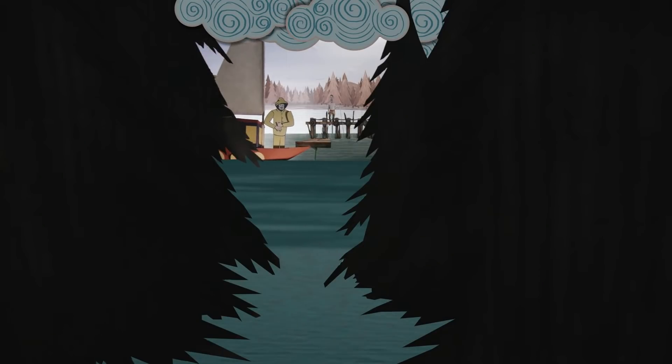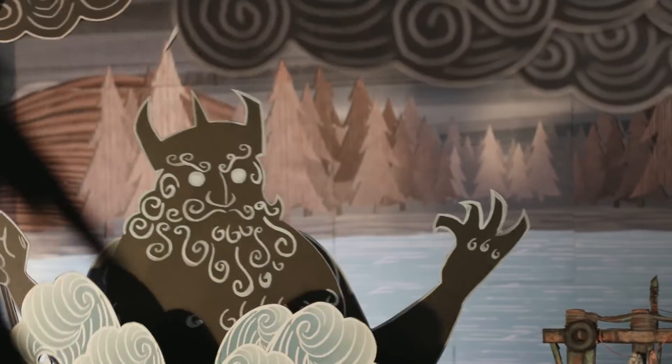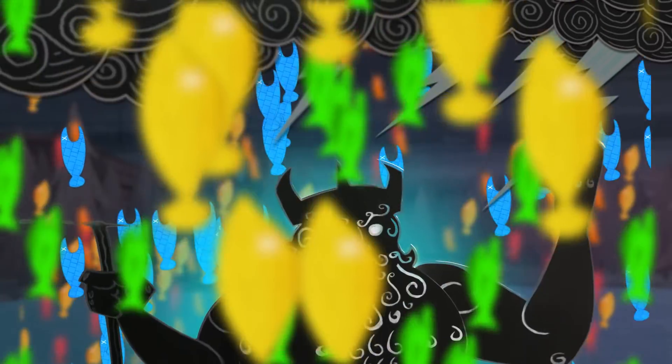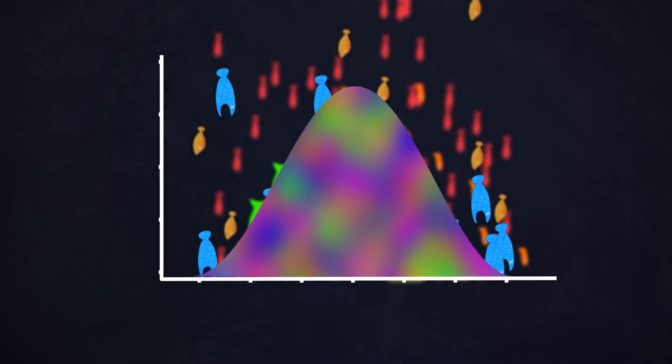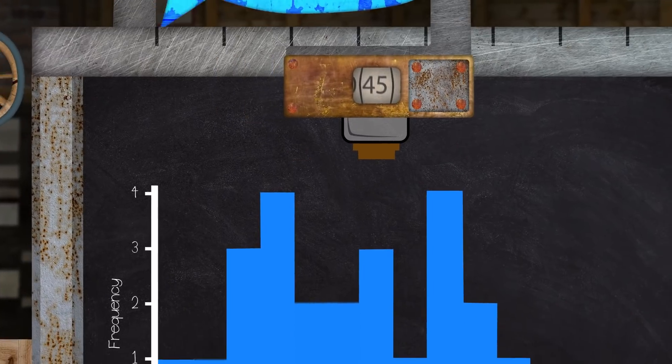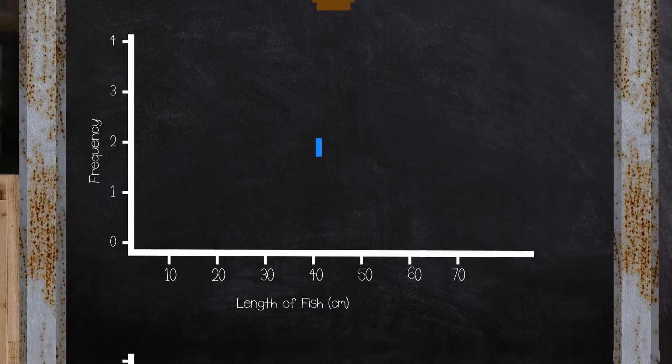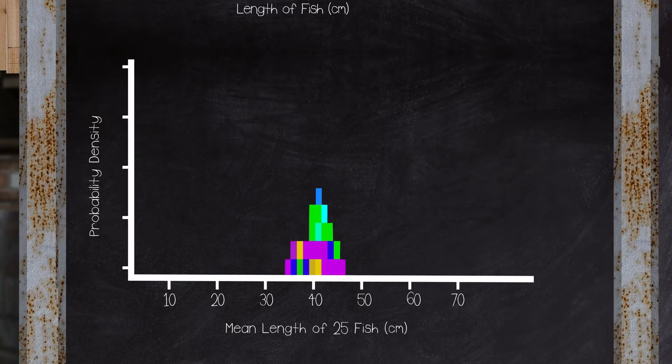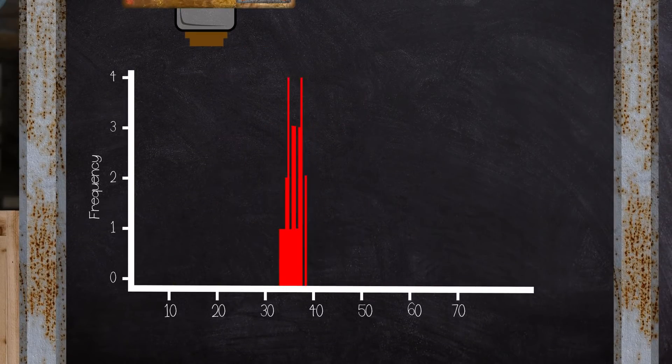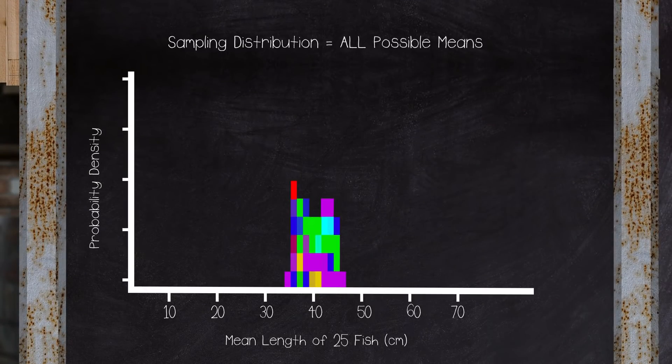Suppose you wanted to take a sample to estimate the mean length of fish in a lake. And bear with me for a moment, but suppose somehow you could know the true population mean length of fish in this lake. While our sample mean should be reasonably close to that true mean of 40 centimeters, we know that due to sampling variability it won't be exactly equal to 40. Our estimate is just one of many possible sample means we could have ended up with on any particular day, and the sampling distribution describes this theoretical set of all possible estimates.